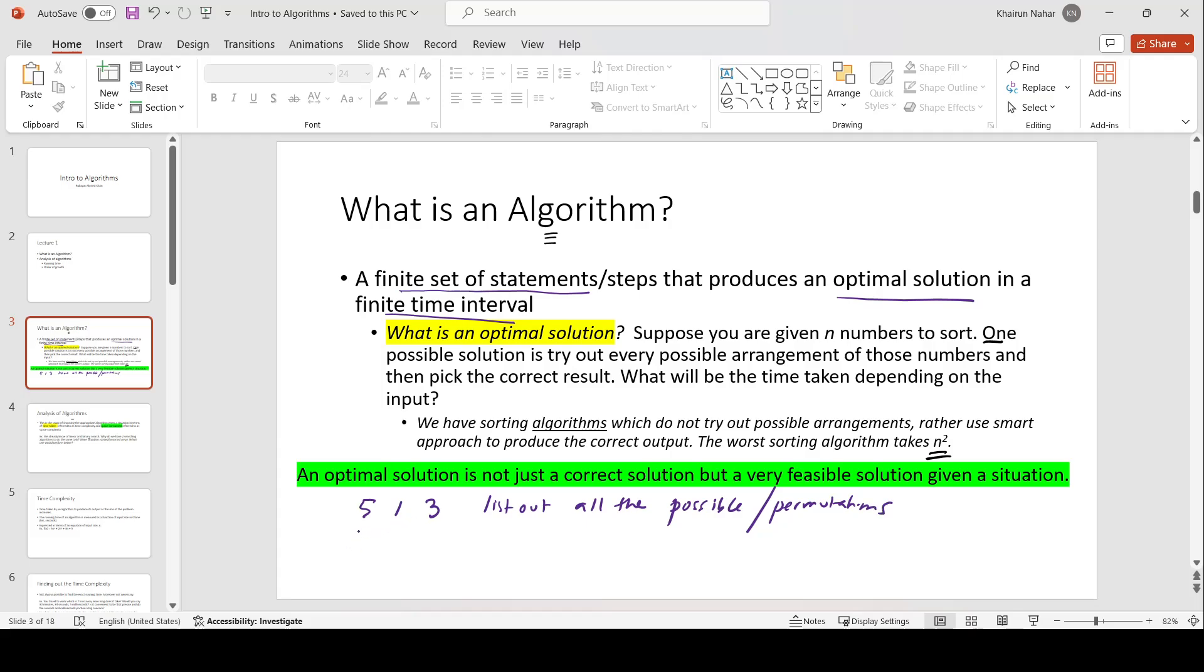Which are 5, 1, 3, 5, 3, 1, 3, 5, 1, 3, 1, 5, 1, 3, 5 and 1, 5, 3. So, after listing out all the possible permutations, I select the correct answer.